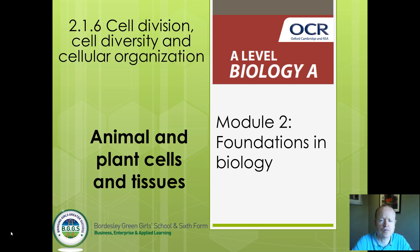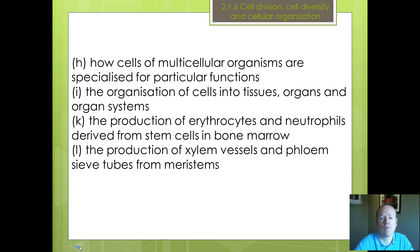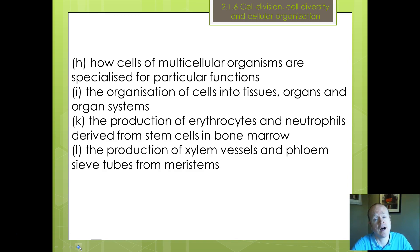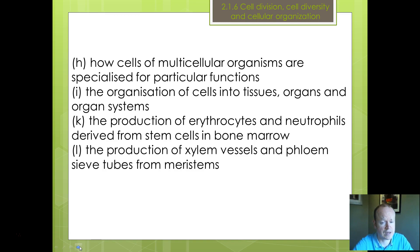Hi, welcome back to the final presentation for OCR Biology Module 2. This is on animal and plant cells and tissues. Let's look at the areas of specification we're going to cover today: how cells are specialized for particular functions, how cells are organized into tissues, organs and organ systems, and then some specific examples of erythrocytes and neutrophils. We'll look at epithelia, different animal tissues, plant tissues, and also the production of xylem and phloem.